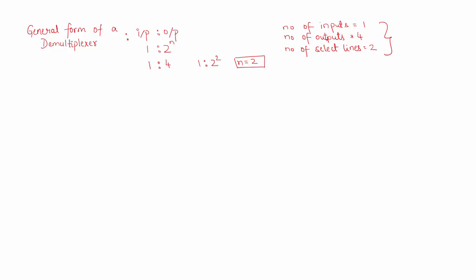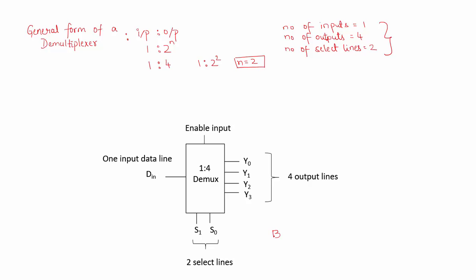Using this information, we can draw the block diagram of the demultiplexer. The block diagram of a 1-to-4 demultiplexer has 1 input data line DIN, 2 select lines S1 and S0, 4 output lines Y0, Y1, Y2, Y3, and 1 active-high enable input. This enable input determines if the demux is enabled or disabled. If the enable input is 1, the demux is enabled; when it is 0, the demux is disabled.